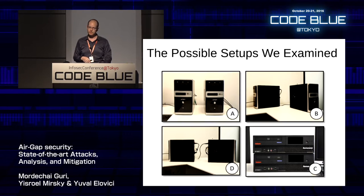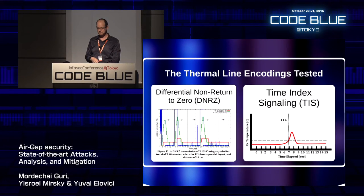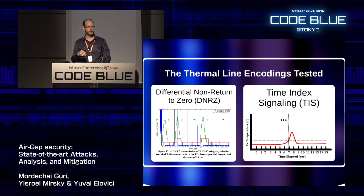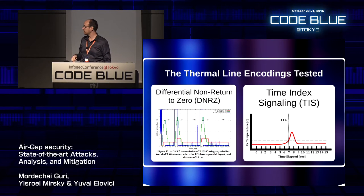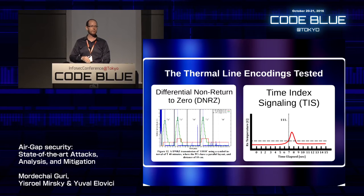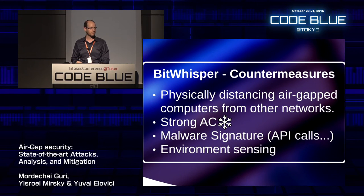Two computers next to one another communicate by raising temperature or doing nothing and letting the room cool. Heat is generated by putting a large load on the CPU or GPU. Two line encodings were examined: one where heating means 1 and cooling means 0 — similar to HVACR; and a novel technique splitting every 16 seconds into 16 intervals, where an impulse of heat at, say, the seventh second encodes binary seven, giving less fluctuation and easier signal reading.